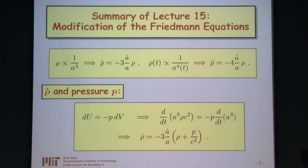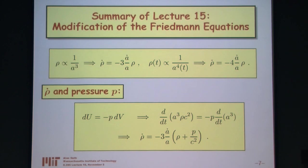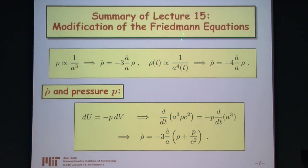We want to understand what this tells us about the Friedmann equations. Pressure turns out to be the crucial issue in determining how fast rho falls off as a expands. If rho is proportional to 1 over a cubed, differentiating gives rho dot equals minus 3 times a dot over a times rho. But if rho falls like 1 over a to the fourth, rho dot is minus 4 times a dot over a times rho. So we get different expressions for rho dot between radiation and matter.